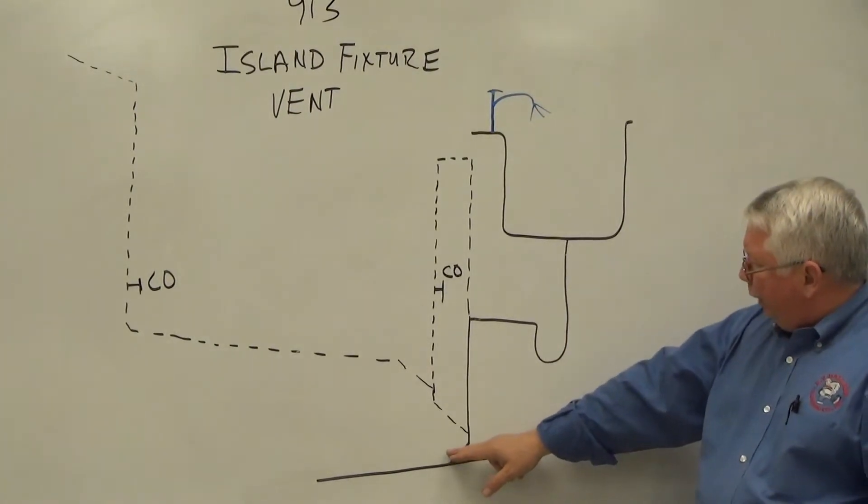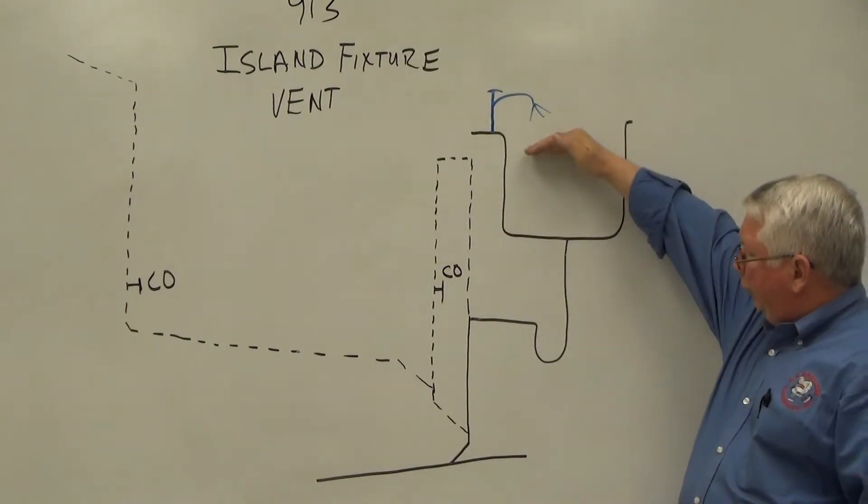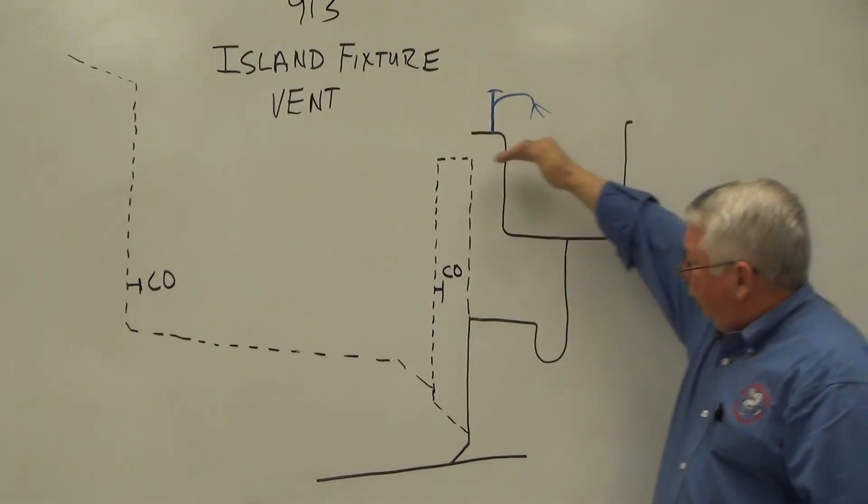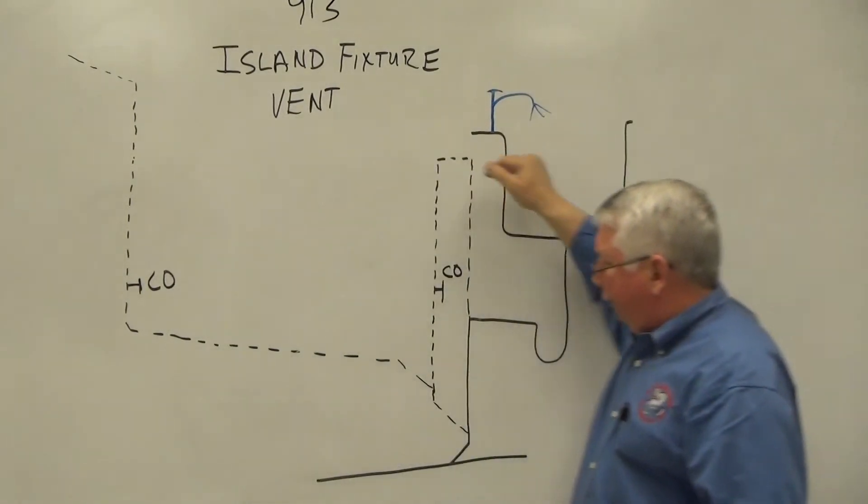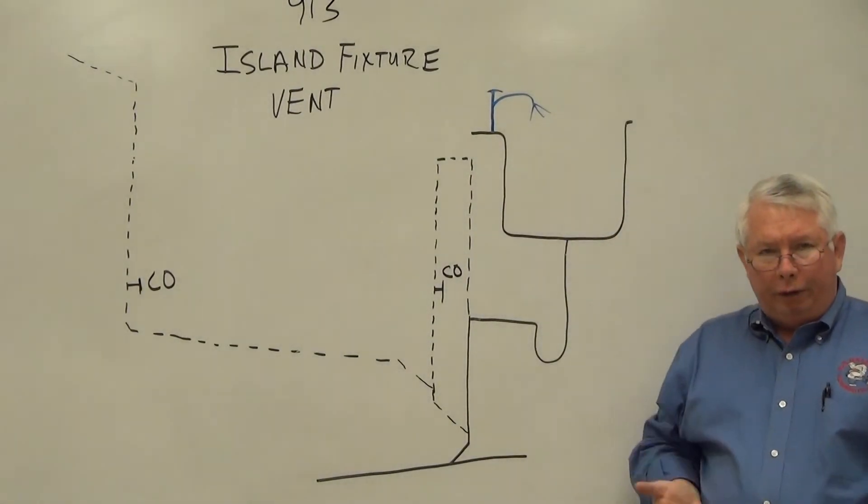If there's a stoppage downstream and the fixture becomes flooded to this point, the flooded water extends all the way through the vent system. Since there's no fixtures to wash the vent that's running horizontally below the flood level rim,